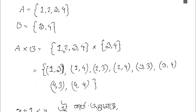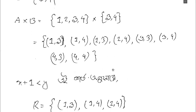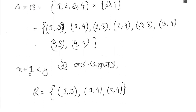When A cross B is formed, the pairs are: (1,3), (1,4), (2,3), (2,4), (3,3), (3,4), (4,3), (4,4). These are all ordered pairs from A cross B, and we now check which satisfy x plus 1 less than y.